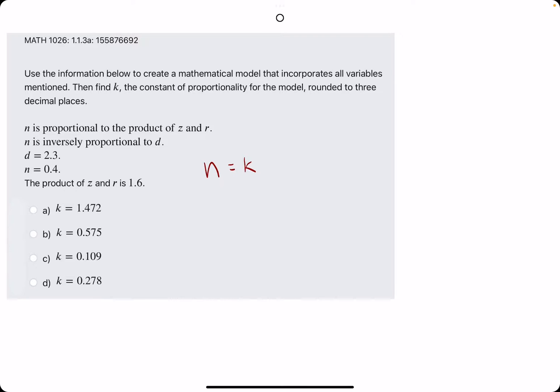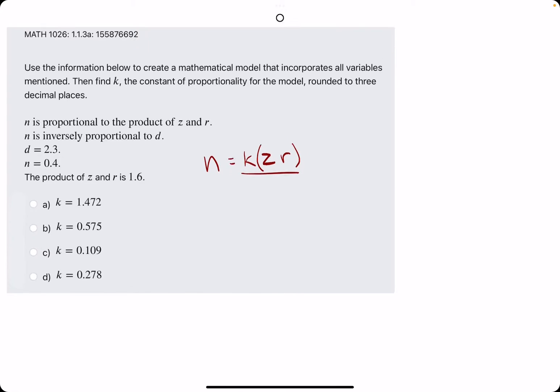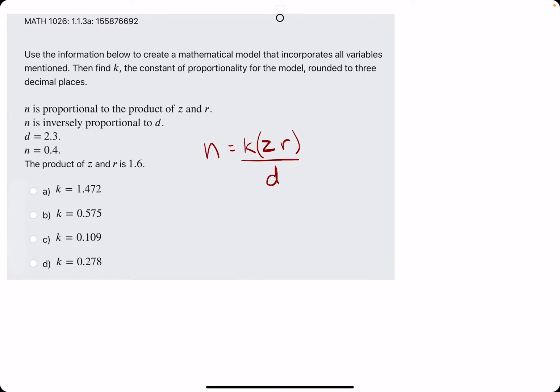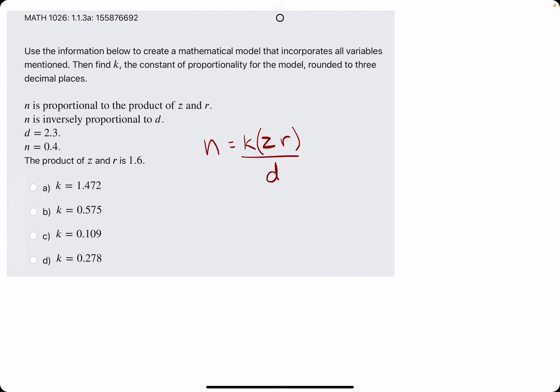Meaning n is equal to k, the constant, times z times r. Then they say n is inversely proportional to d, so on top of what we already have constructed, we will just incorporate the variable d into this equation. Inversely proportional, meaning we throw d in the denominator.